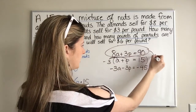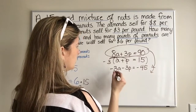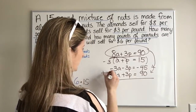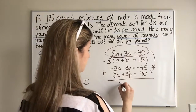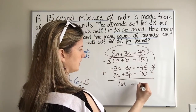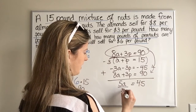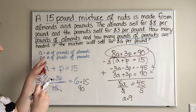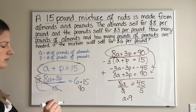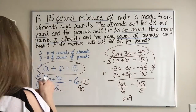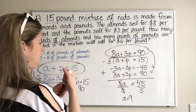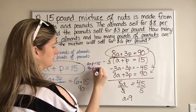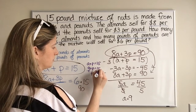Bring down the first equation: 8A plus 3P equals 90. Now we add them: negative 3A plus 8A is 5A, and negative 45 plus 90 is 45. So 5A equals 45 — divide both sides by 5 and A equals 9. Then since A plus P equals 15, we substitute: 9 plus P equals 15, so P equals 6.